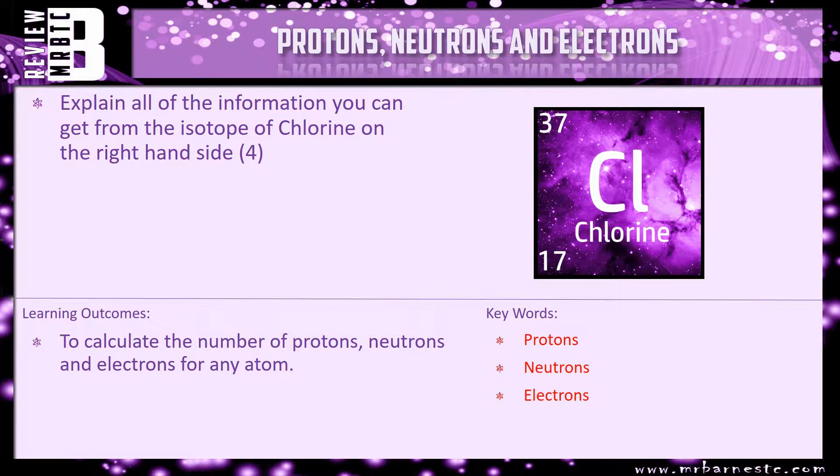There is a review question, which is explain all of the information you can get from the isotope of chlorine on the right hand side. So you've got top number 37, bottom number 17. What does that 17 tell you? How do you work out the neutrons? That's all we're looking for in this question.